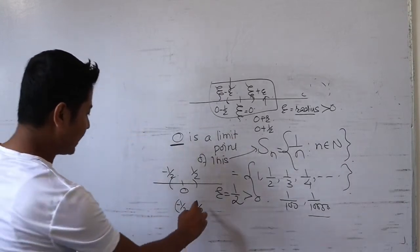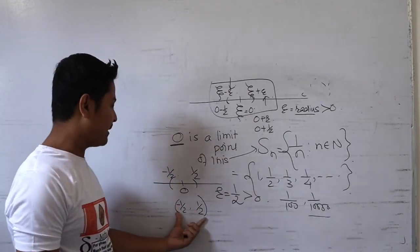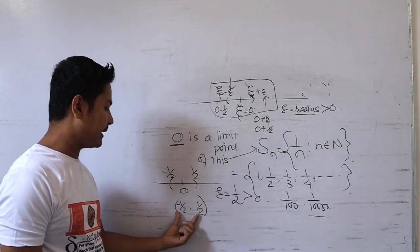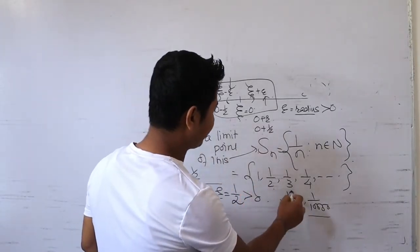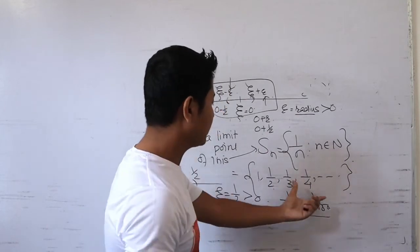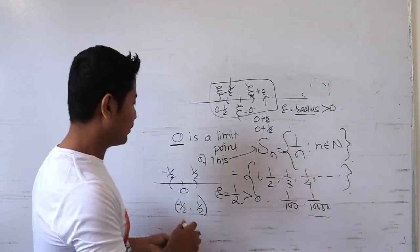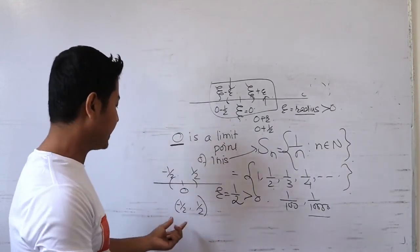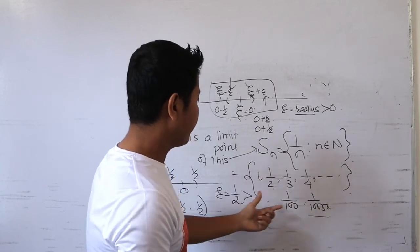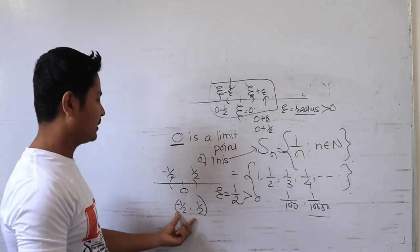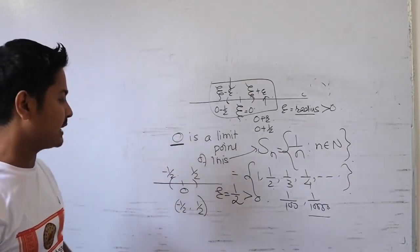The members of the sequence are 1, 1/2, 1/3, 1/4, and so on. In this neighborhood (−1/2, 1/2), infinitely many members of the sequence lie inside it — specifically 1/2, 1/3, 1/4, and all subsequent terms. So infinitely many members of the sequence are contained in this neighborhood, and we get zero as a limit point.